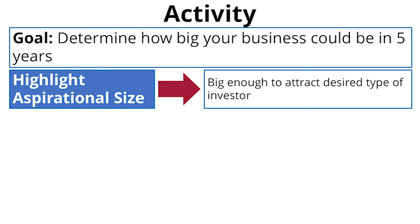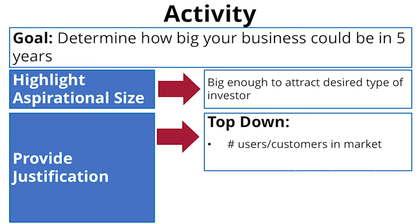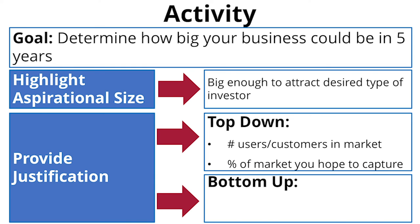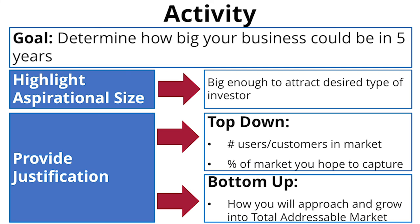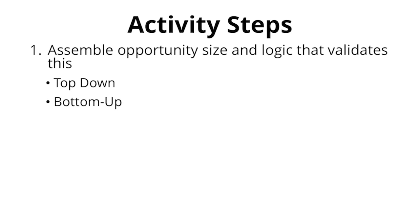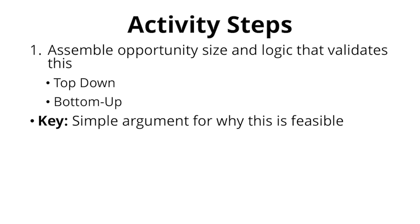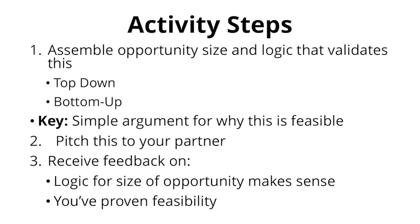Once you do that, you then have to find a justification for someone who really doesn't know that much about your market or your business. That can be top-down — this many users, this many hair salons, this many children who brush their teeth, whatever the metric is — and we expect to get a share of 5% or 10% of that market by this period. Or it can be bottom-up: we're going to build out restaurants, three per city, and capture this many cities in this period of time. The key is that you want a market big enough to attract the kind of investor you want, and you want to show it to somebody who knows nothing about your business. So the exercise is to put together the opportunity size, put together your reasons and logic for why this is so, and try to convince your partner that this is a feasible venture and that your logic for the size of the opportunity makes sense.